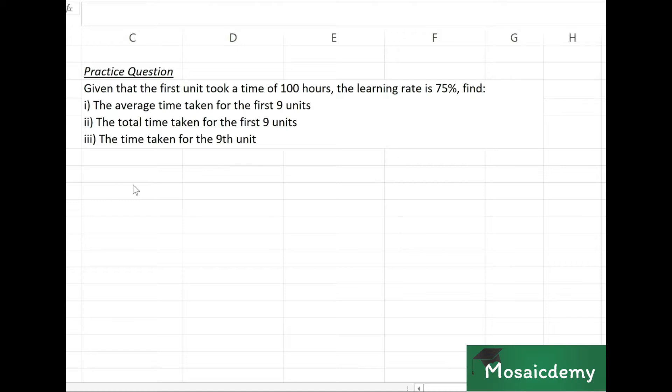The question is: given that the first unit took a time of 100 hours, the learning rate is 75%, find the average time for the first 9 units, total time for the first 9 units, and time taken for the 9th unit. The exam question won't always be so straightforward in the requirement, but you need to know all these calculations.